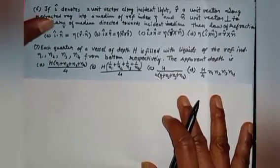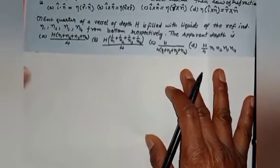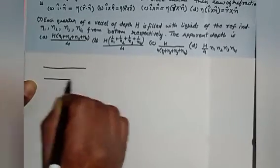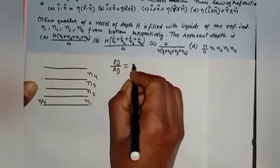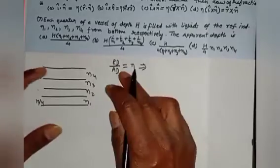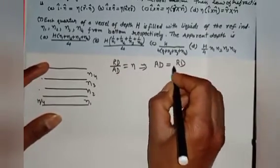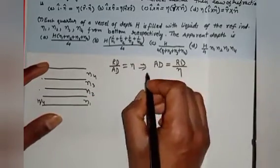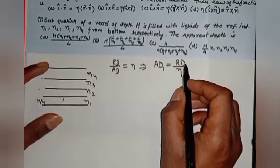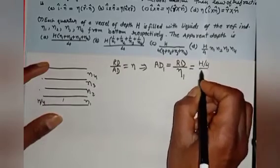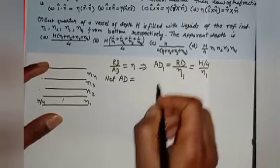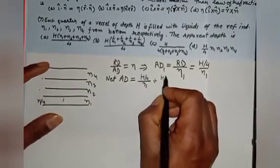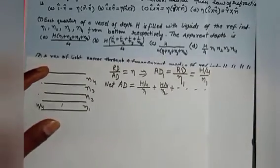Question 7: Each quarter of a vessel of depth h is filled with liquid of refractive index eta1, eta2, eta3, eta4 from bottom respectively. The apparent depth is found using: real depth upon apparent depth equals refractive index, so apparent depth equals real depth upon eta. For each layer, apparent depth = h/4 divided by eta. So net apparent depth is h/4 upon eta1 plus h/4 upon eta2, and so on.